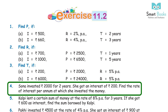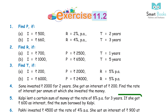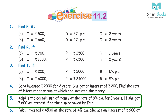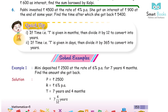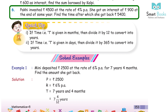Question 4: Suna invested Rs 2,000 for 2 years. She got an interest of Rs 200. Find the rate of interest per annum. Answer: 5%. Question 5: Kalpi lent a certain sum at the rate of 8% PA for 3 years. If she got Rs 600 as interest, find the sum borrowed. Answer: Rs 2,500. Question 6: Paakhi invested Rs 4,500 at 4% PA and got an interest of Rs 900. Find the time after which she got back Rs 5,400. Answer: 5 years.